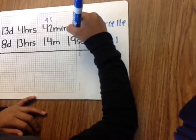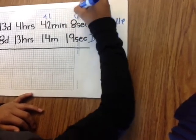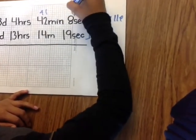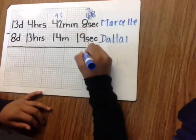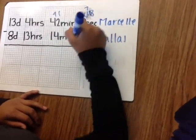So 68 minus 19 is, we can't subtract, so we're going to borrow. And then 7, 18, 18 minus 9 is 9, and 7 minus 1 is 6.